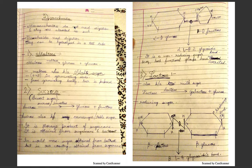Disaccharides need digestion. They can be hydrolyzed in a test tube. Examples of disaccharides are maltose, sucrose, and lactose. Maltose is broken down by the enzyme maltase into glucose and glucose — that is, maltose is a combination of one glucose and one glucose. Maltose is also known as malt sugar, and it is present in germinating seeds. From germinating barley, beer is prepared.